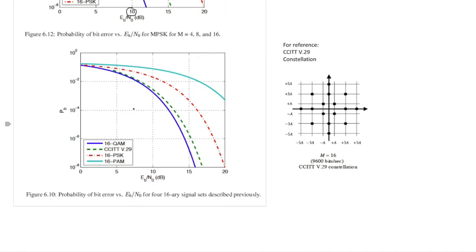You can see that it might be nice to compare the modulations all together on one plot for a given M. And so here in this last figure, Michael Rice has put four different modulations that each have 16 symbols onto the same figure. 16-QAM has.